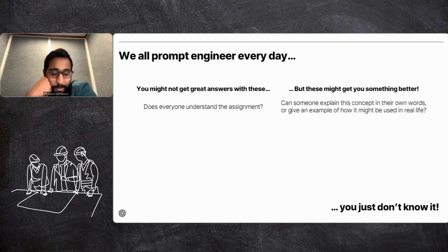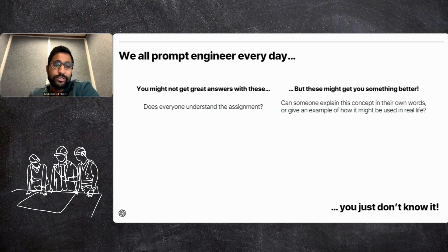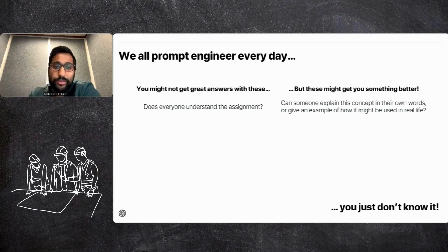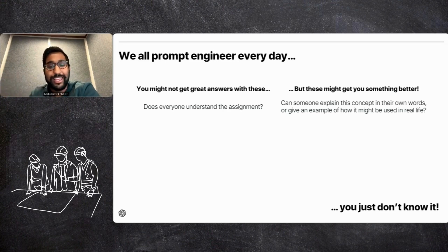For example, maybe some of you as instructors have asked 'Does everyone understand the assignment?' and you've gotten some head nods, gotten quiet murmurs. You can ask the same question but in a different way: 'Can someone explain this concept in their own words or give an example of how it might be used in real life?' In this case, the overall goal is to elicit participation and validate that people understand the assignment. The first way, you're keeping it open-ended. In the second one, we're a little bit more specific and the goal is that it elicits a different response, even though the goal is the same.